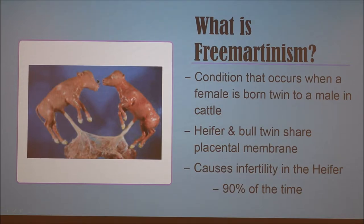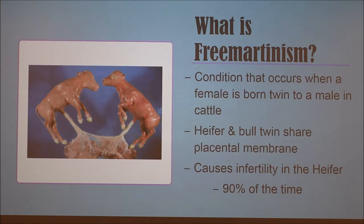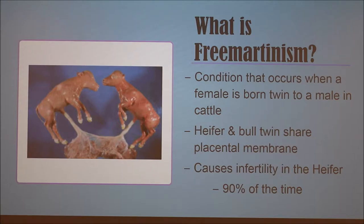The problem with freemartinism is that the heifer and bull calves share a uterus, and the same placental membrane connects the fetuses to the dam. This condition causes infertility in heifer calves about 90% of the time. The bull calf is not affected, but sometimes there is reduced fertility due to a slight decrease in testes size.